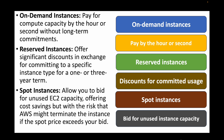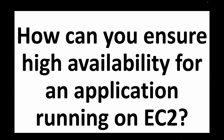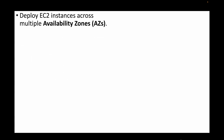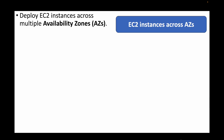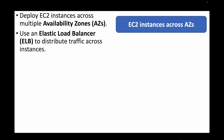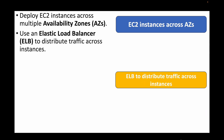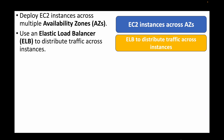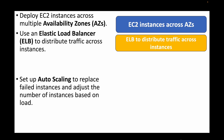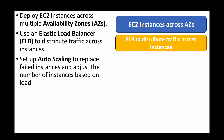The next question is: how can you ensure high availability for an application running on EC2 instances? First, launch instances across multiple availability zones — you should have multiple EC2 instances spread across multiple availability zones. Then place these instances behind a load balancer, which takes care of distributing traffic across the EC2 instances.